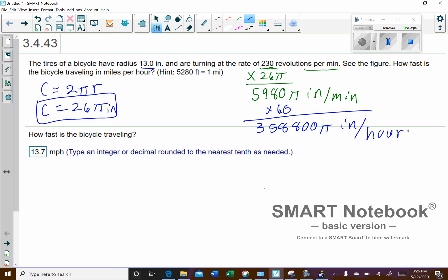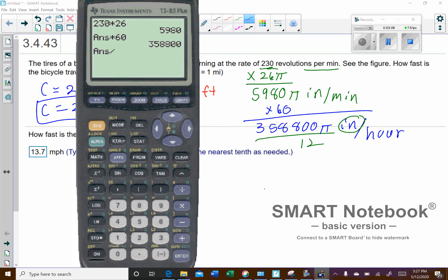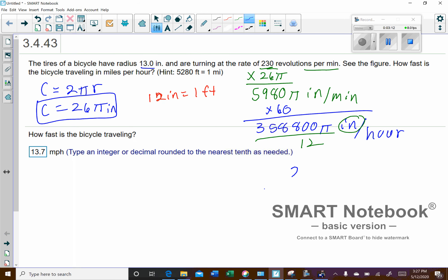Okay, but we don't want our answer in inches. We want it in miles. So we have a couple of conversions to do here. First, we've got to convert to feet. So 12 inches is 1 foot. What we'll do here is start by dividing by 12 to convert the inches into feet. Hopefully it divides nicely. We'll divide by 12, and it does. That works out nice. So 29,900π feet per hour.